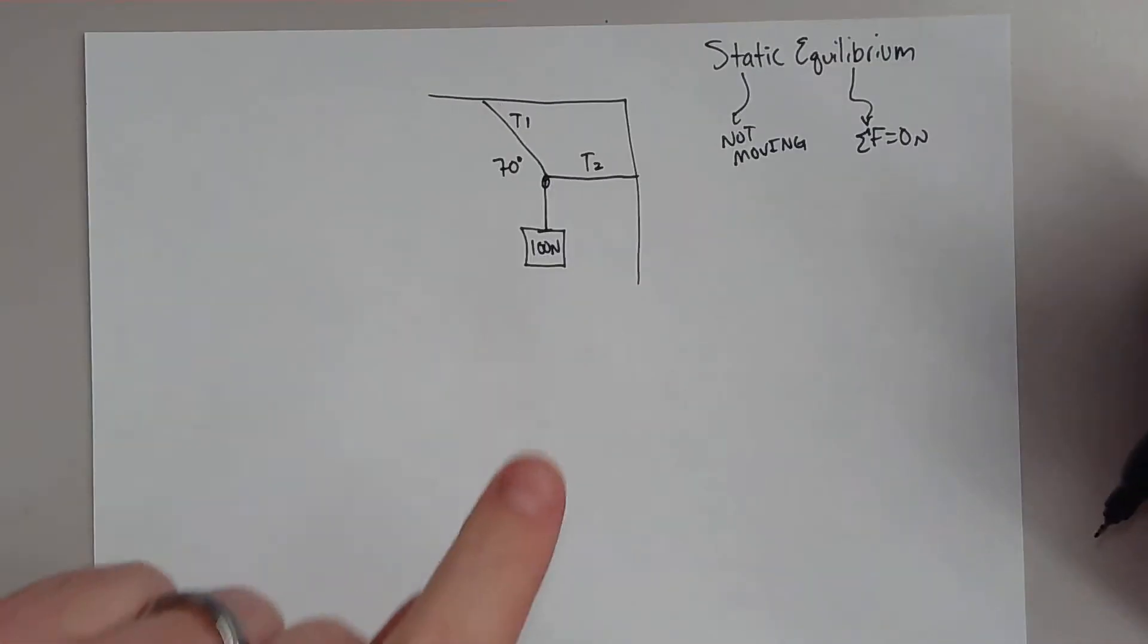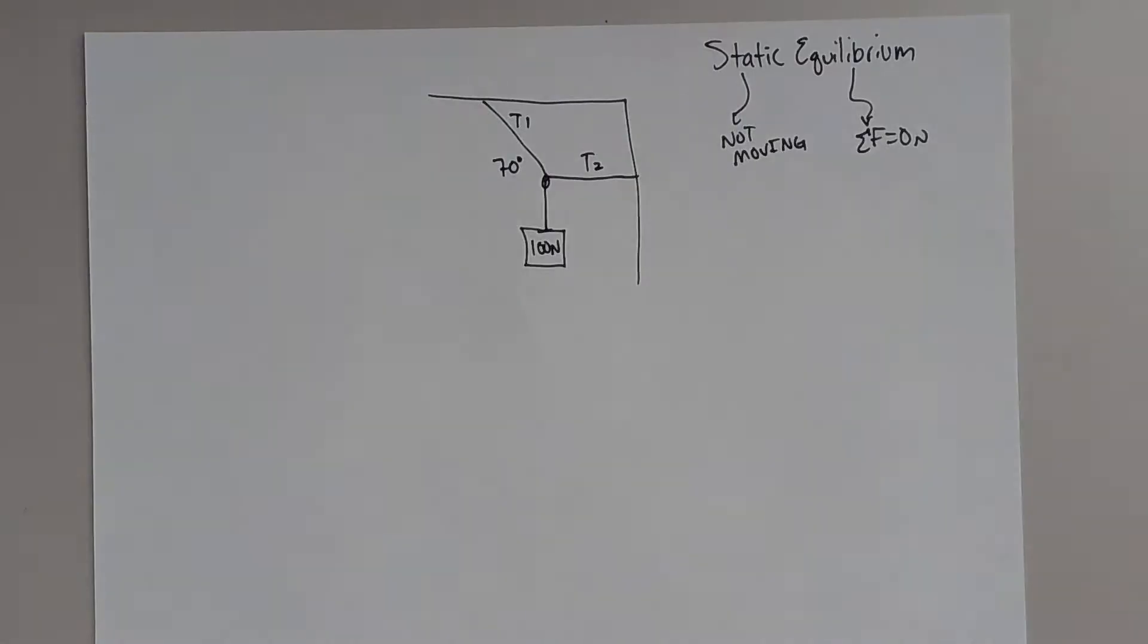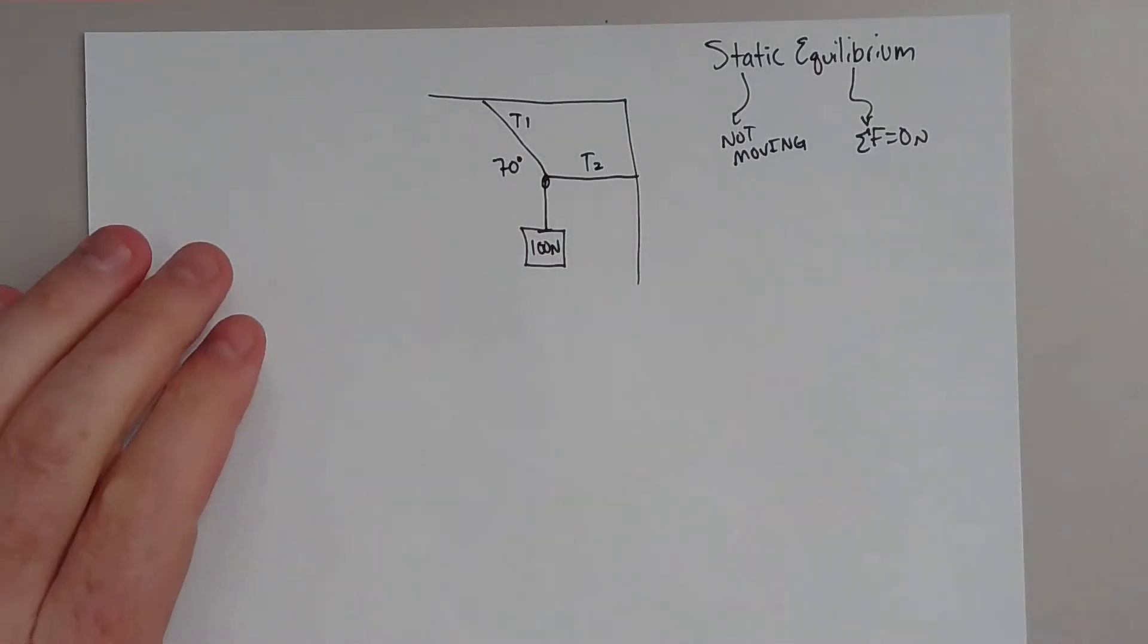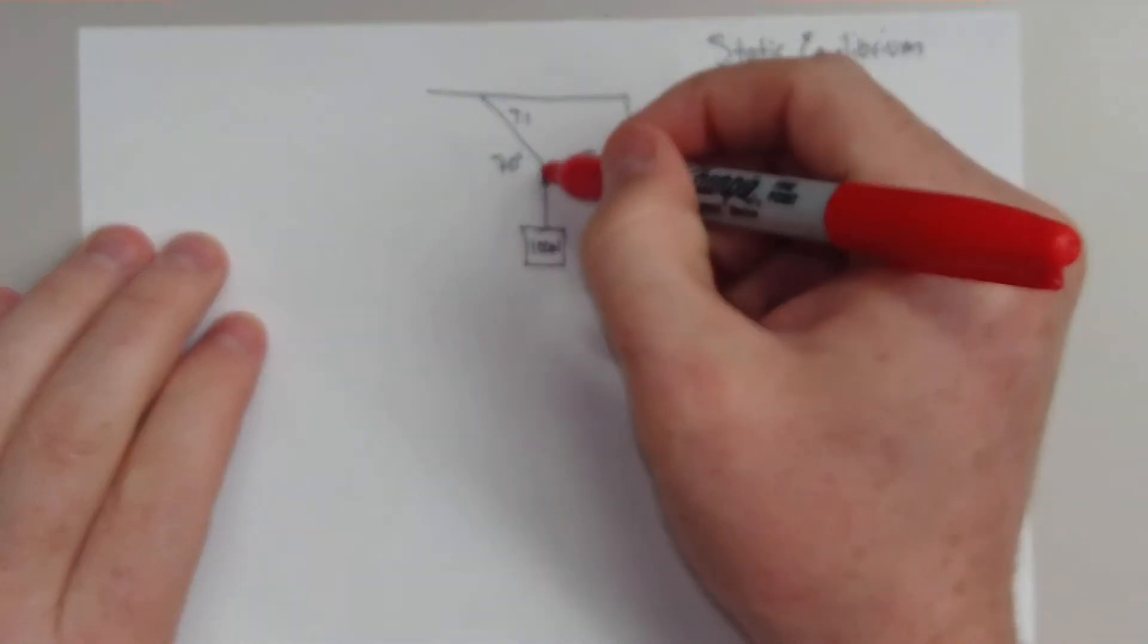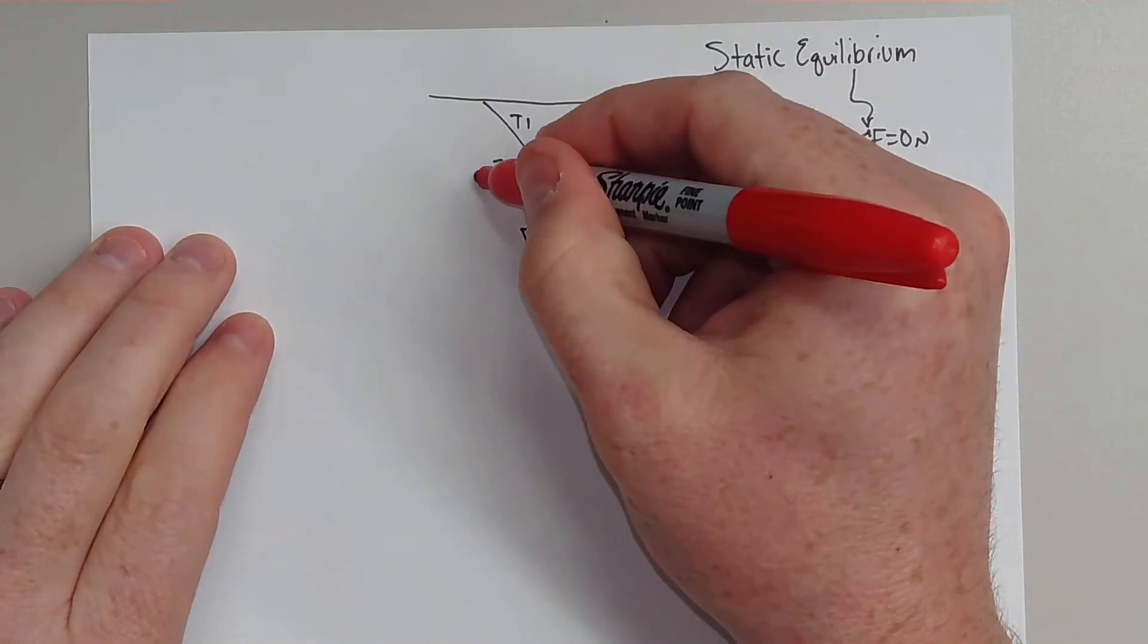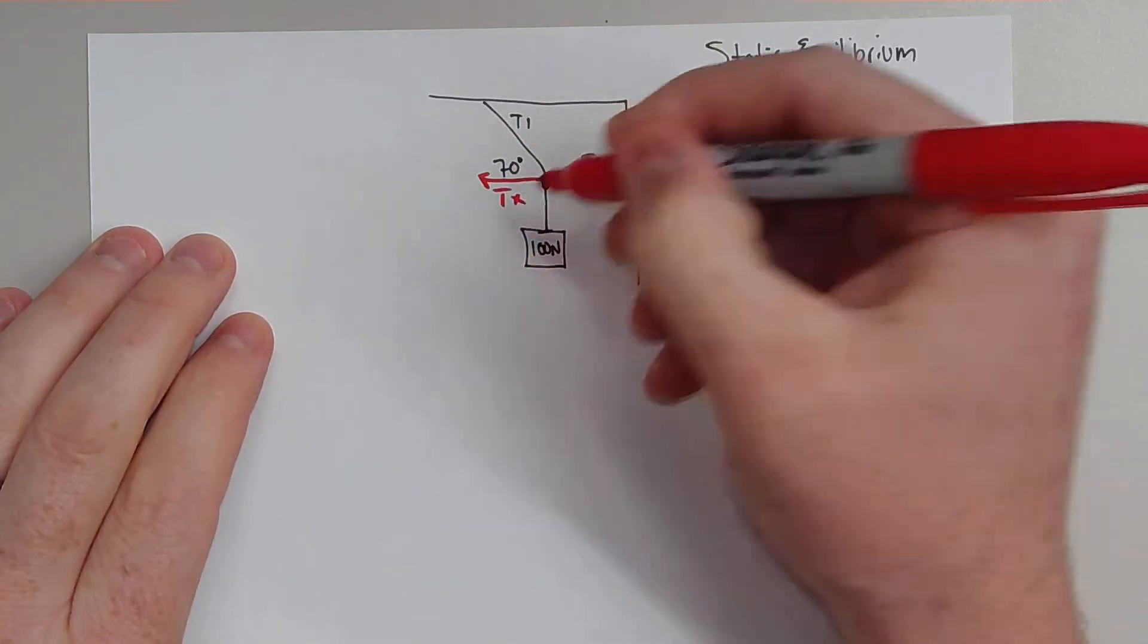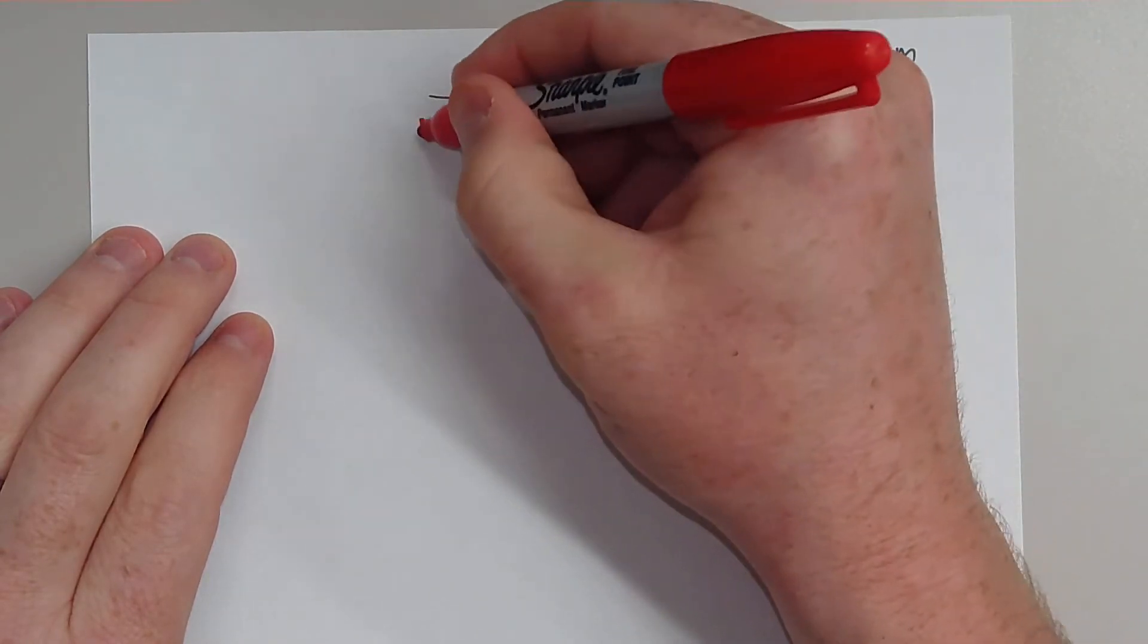Today, we have this problem set up where we have a hundred newton weight suspended by two different ropes, and one of the ropes is at 70 degrees. So the question is, what is the tension in each one of these ropes? Well, in order to do this, we have to understand that we have to break these down into components.